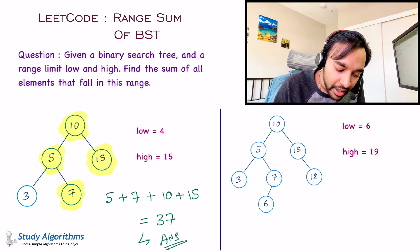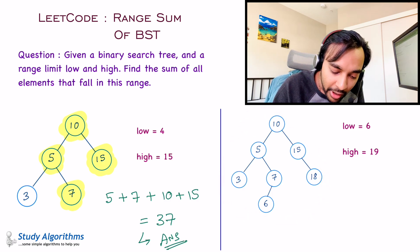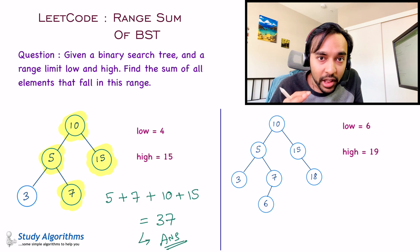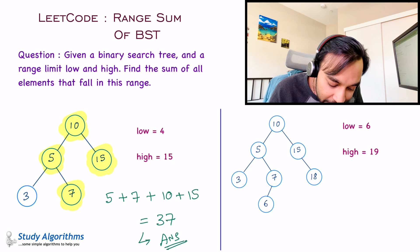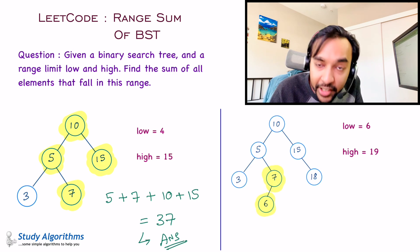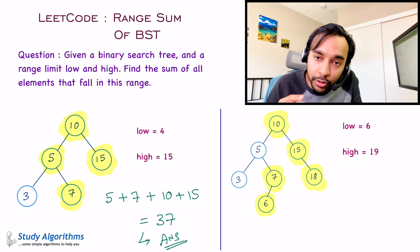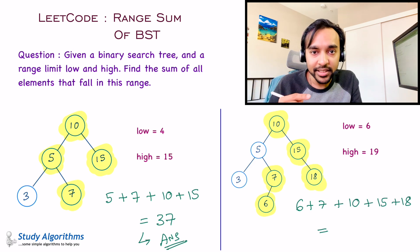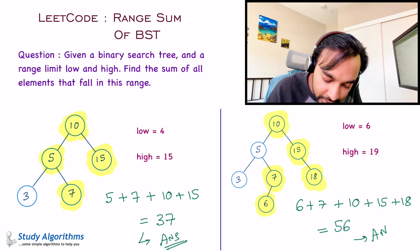Similarly, we can look at a different test case. Test case number 2. This time our tree is pretty large, and you have the range 6 and 19. Once again, you need to find out all the elements that are inclusive of this range. If you look at this tree, 6 is inclusive, 7 is in the range, 5 is not in the range, then you have 10, 15, and 18. I will simply add up all these elements, and when I sum them, I get the answer 56, and for this case, this will be your answer.